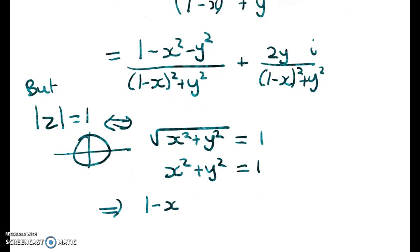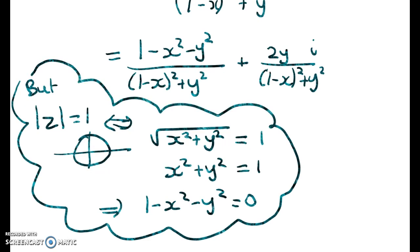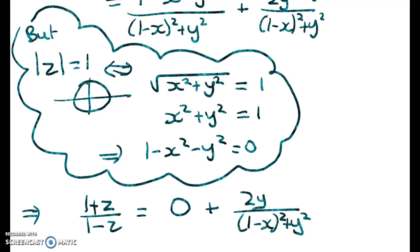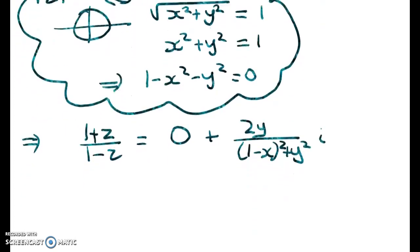So 1 - x² - y² is equal to 0. Right, so we can think of all of that as a little bubble out the side. So we have (1+z)/(1-z) is equal to 0 plus this. Right, so the real part of (1+z)/(1-z) is equal to 0.